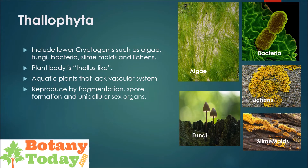Thalophyta includes lower cryptogames such as algae, fungi, bacteria, slime molds, and lichens. These are the simplest plants where the body is not differentiated into roots, leaves, and stems. The simplest thalophytes are bacteria. These are aquatic plants that can grow in fresh as well as marine water. These lack a vascular system. Reproduction can be vegetative by fragmentation, asexual by forming asexual spores, and sexually by forming unicellular sex organs.